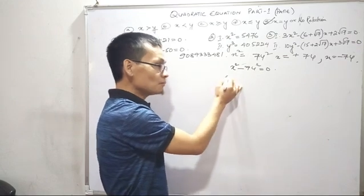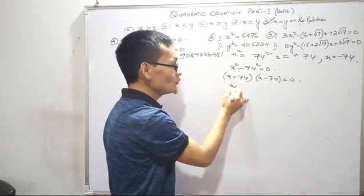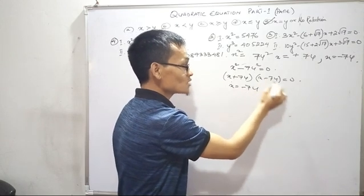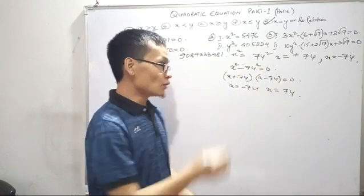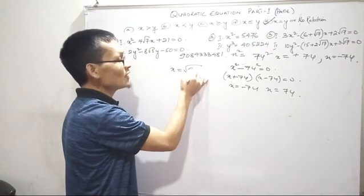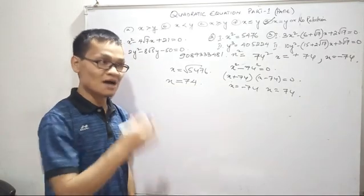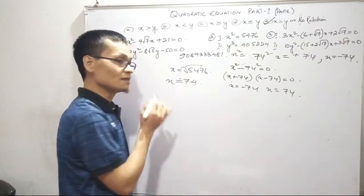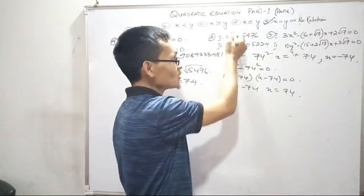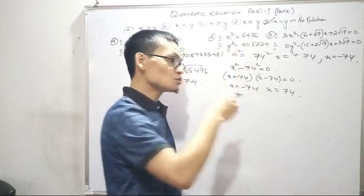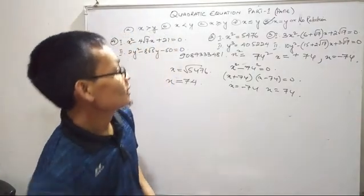a squared minus b squared, a squared minus b squared — that is a plus b into a minus b. x value: plus minus, plus minus, plus plus, and minus minus. Here, x squared — a squared. I'm sorry, taking this side: plus a minus. Yeah, a sort of metal.